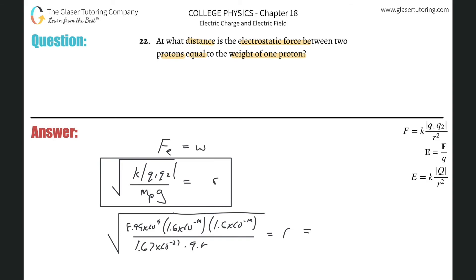We get a distance of about 0.119 meters. That will be the distance where the electrostatic force totally balances the weight of a proton. Thank you very much for tuning in — please remember to subscribe and we'll see you soon.